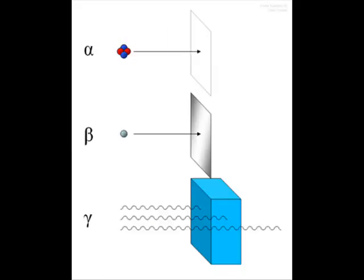A gamma ray is a form of electromagnetic radiation. They are generally characterized as electromagnetic radiation having the highest frequency and energy, and also the shortest wavelength. Gamma rays consist of high-energy photons that have no electric charge and no rest mass. Gamma rays are often used for medical purposes such as X-rays, CT scans, and radiation therapy.